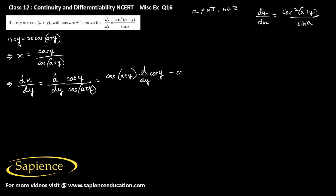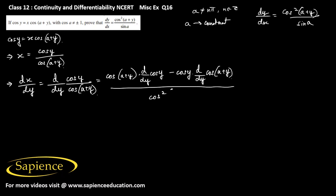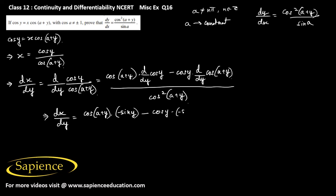...minus cos(y) into d/dy of cos(a+y). Here, a is a constant while y and x are variables. This is divided by cos²(a+y). Therefore dx/dy equals cos(a+y) into (−sin y), minus cos(y) into (−sin(a+y)), all divided by cos²(a+y).